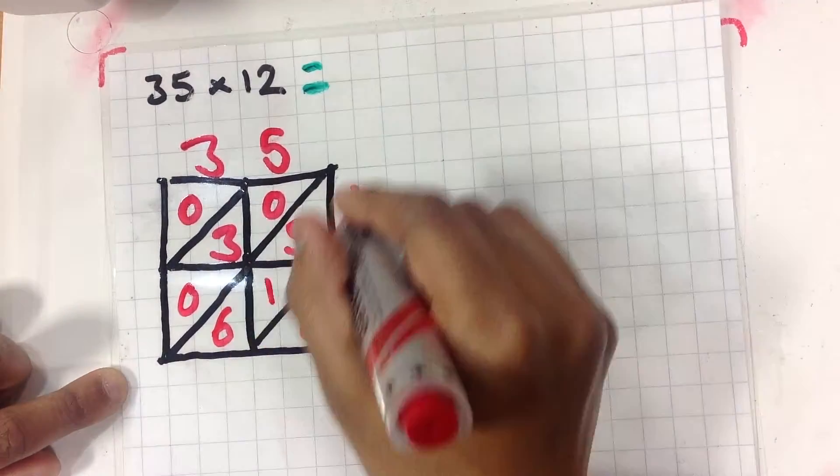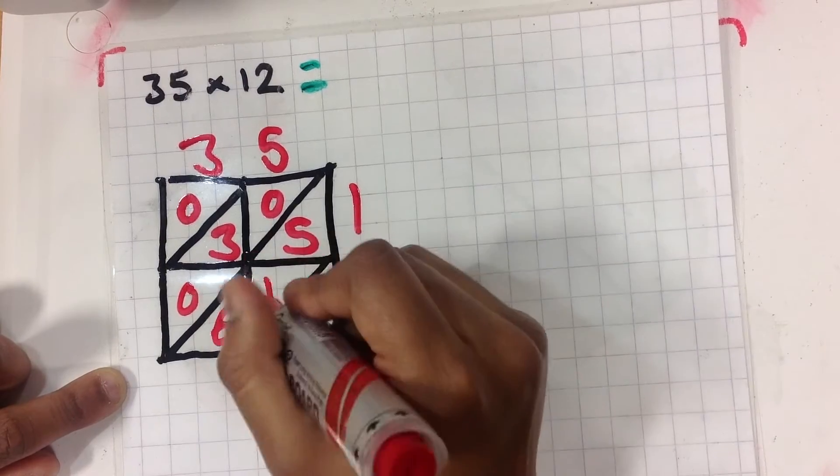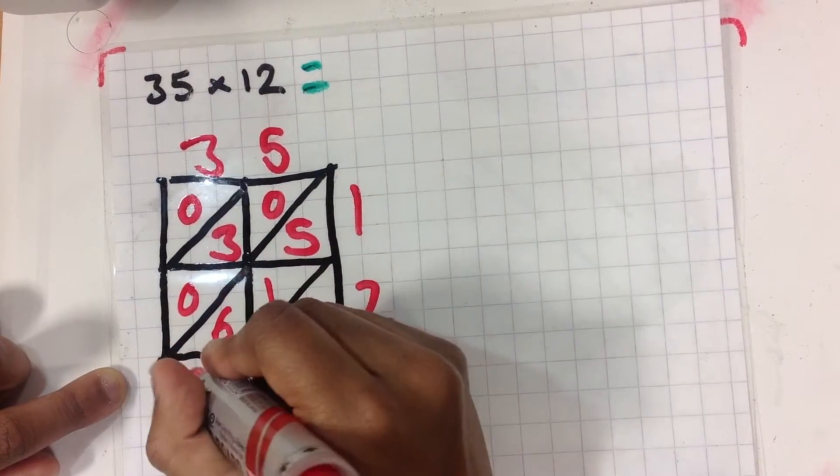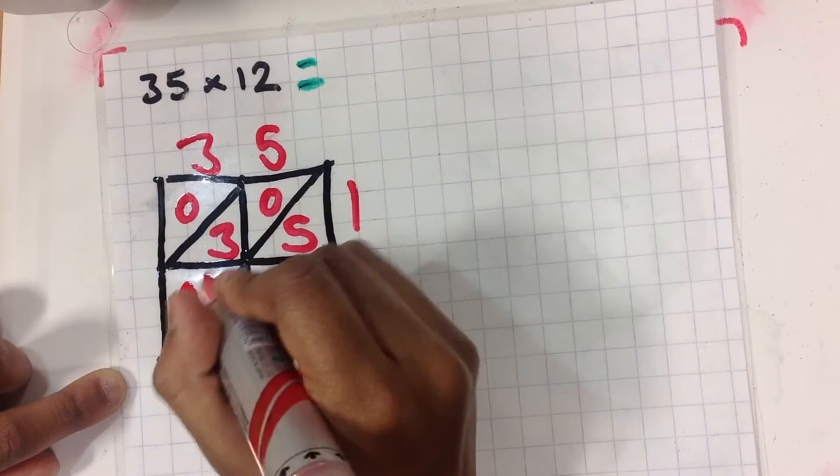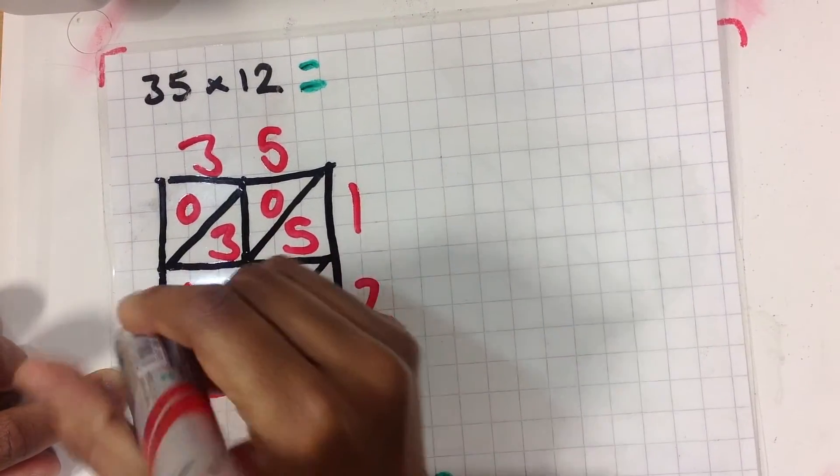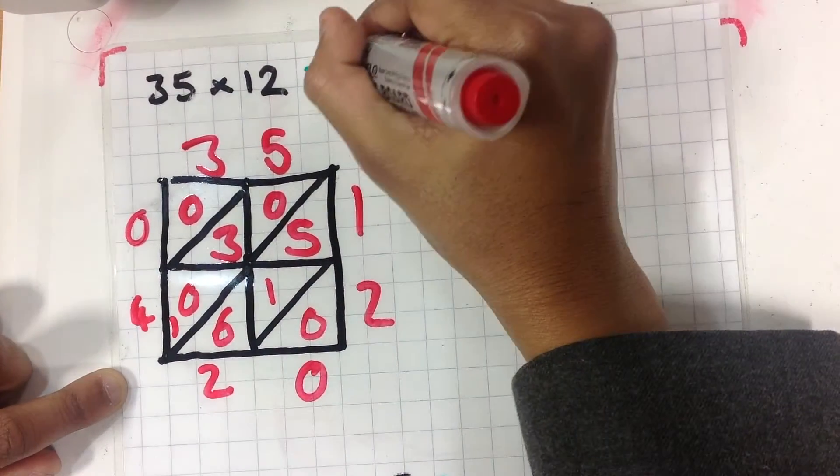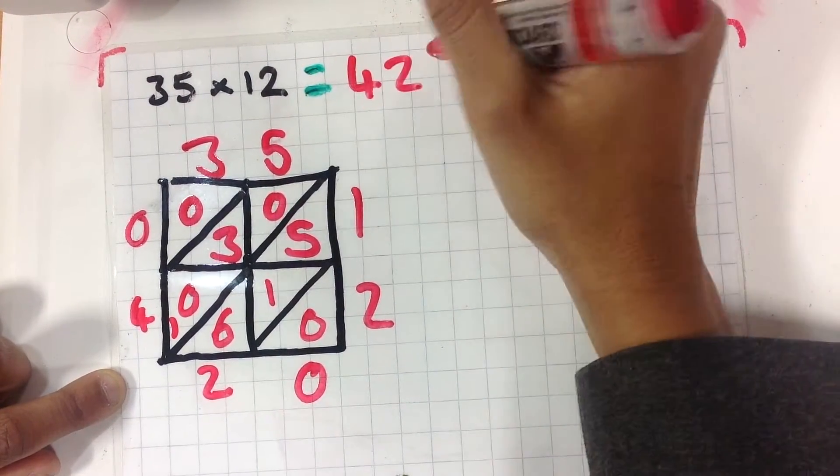Now you add them up diagonally. So this is going to be 0. This is going to be 1 add 5 equals 6. Add 6 equals 12. Carry the 1. 3 add 1 equals 4. And then put the 0. So the answer will be 4, 2, 0.